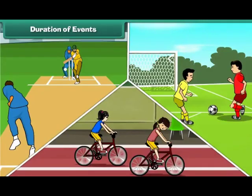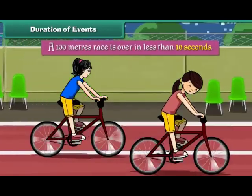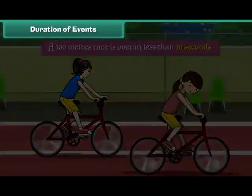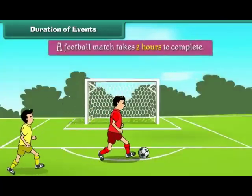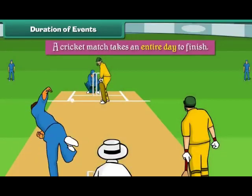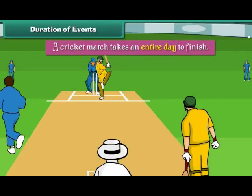Duration of events. Different events take different times for completion. A hundred meters race is over in less than 10 seconds. A football match takes 2 hours to complete. A cricket match takes an entire day to finish.